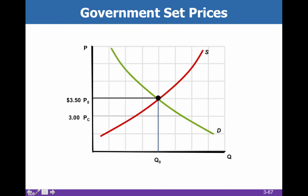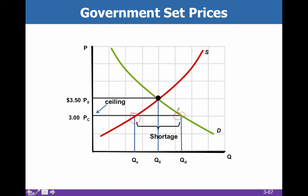Let's see what that looks like graphically. You can imagine if the ceiling is set too low — so if that apartment is set at $300 rather than $3,500 like it should be — then very few people are going to be interested in supplying those apartments for rent, but everybody's going to want to live in them. So there will be a shortage of those apartments.